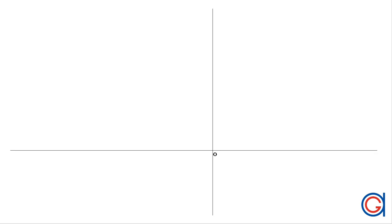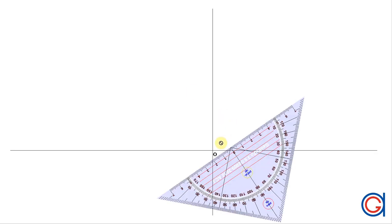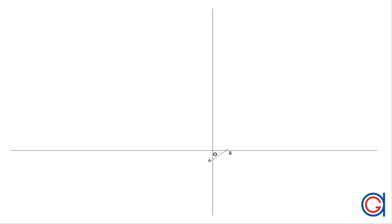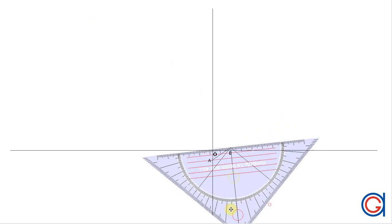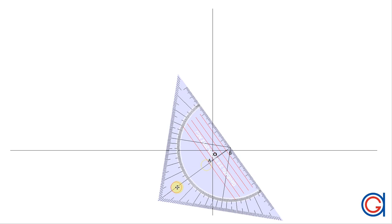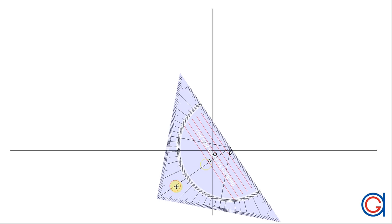The next step is to draw a diagonal line AB as can be seen here. The only important criteria of this line AB is that the distance OA is shorter than the distance OB. The line segment OB divided by OA is going to determine the constant of the geometric progression of the spiral.